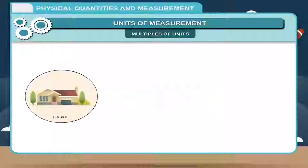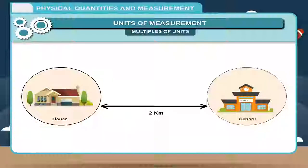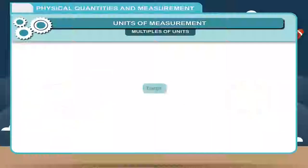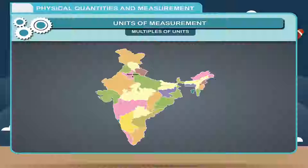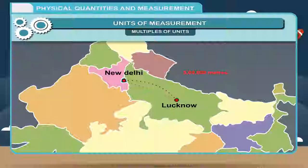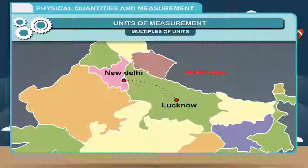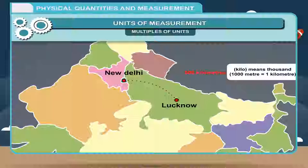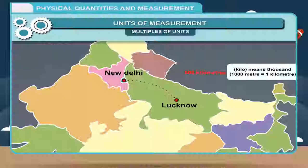Multiples of Units: Multiples are the factors used to create larger forms of units. For measuring long distances, meter and centimeter are not convenient. For example, the distance between Delhi and Lucknow is approximately 5 lakh meters, which is inconvenient. The easy way to say this is: the distance between Lucknow and Delhi is 500 kilometers. Here, kilo means thousand — 1000 meters is equal to 1 kilometer. The higher units are called multiples of units.